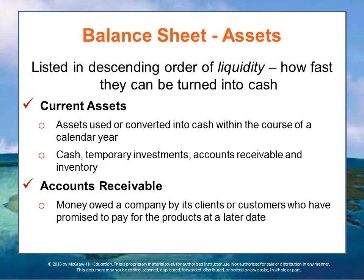After your current assets, you have long-term or fixed assets, and these represent a commitment of organizational funds for at least one year — assets that you bought something with that's going to last longer than a one-year period. Items often classified as fixed assets include long-term investments, plant and equipment, or property. You might also have intangible assets such as corporate goodwill, reputation, patents, or other kinds of intellectual property that one would own over a period of time.